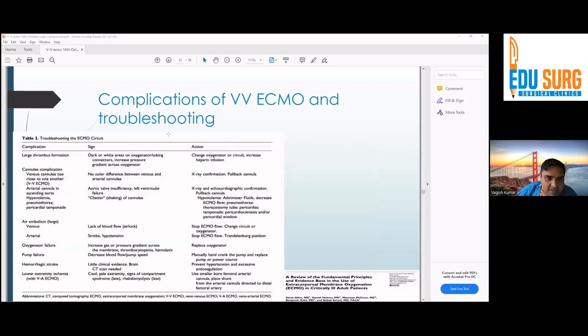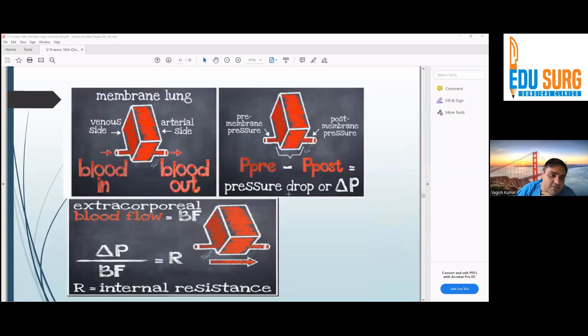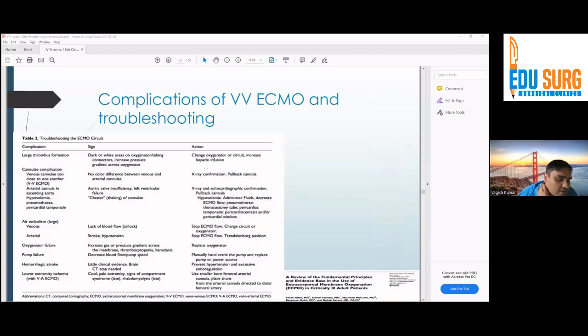Coming to the complications of VV ECMO and troubleshooting. Most importantly, there may be a clot in the membrane. Normally, this is the normal clot where we take the blood, but this clot in the middle of the membrane is not very good and it will impair your oxygenation. It will increase the pressure of the ECMO membrane and increase the risk of rupture as well. If there is clotting, you have to change the circuit and you have to change the membrane oxygenator as well.